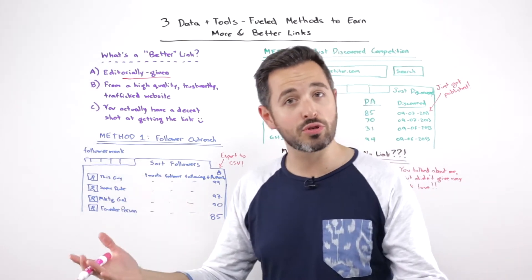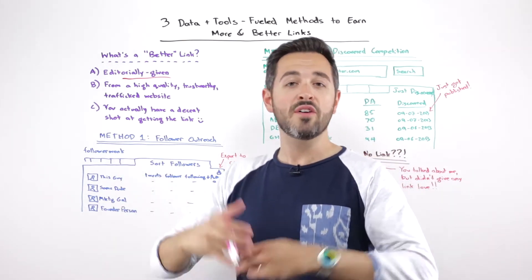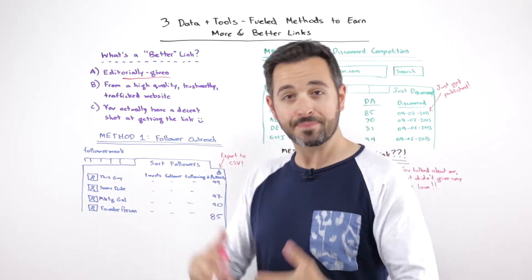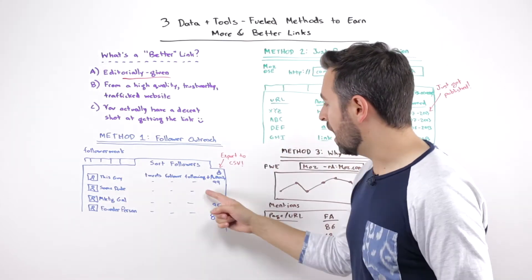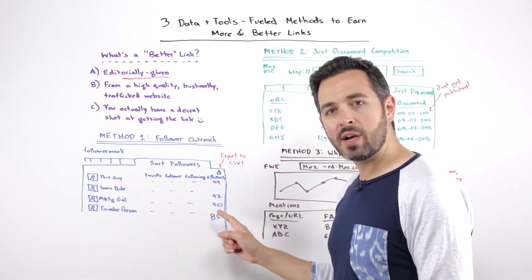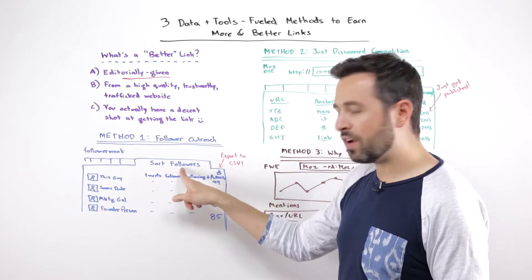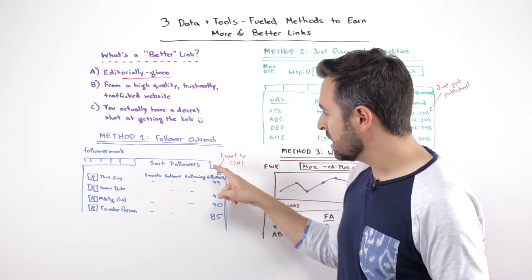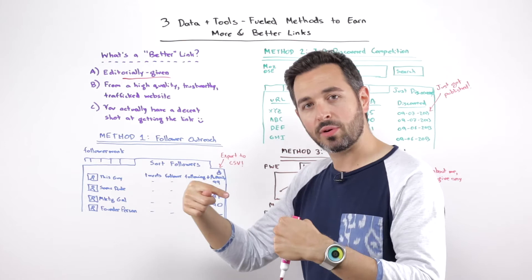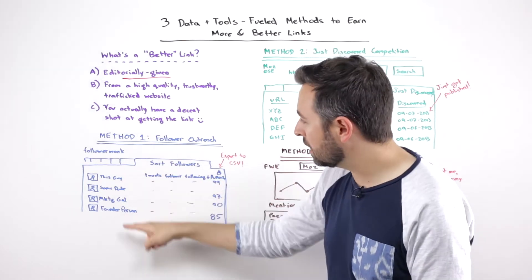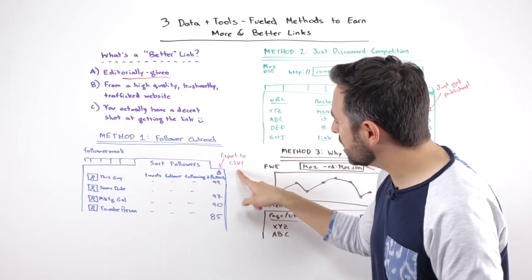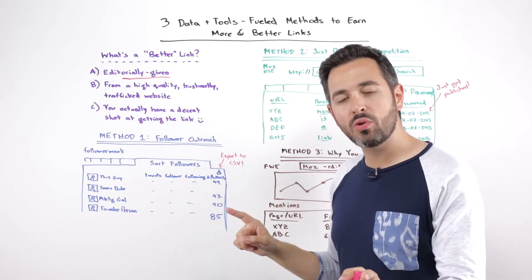So this is FollowerWonk. You could use a tool of your choice. You might do Find People on Plus or some of the other social metrics tools. But FollowerWonk, I can go right in here, and on the Sort Followers tab, once I've logged in, I can sort my followers and say, show me a list of them, and then I can export to CSV.